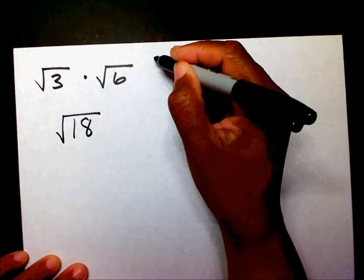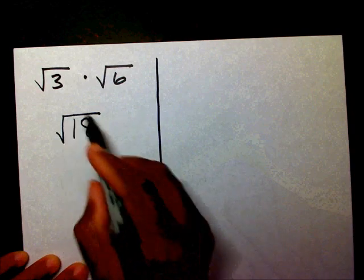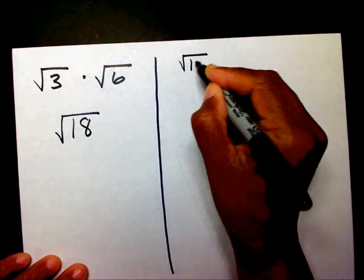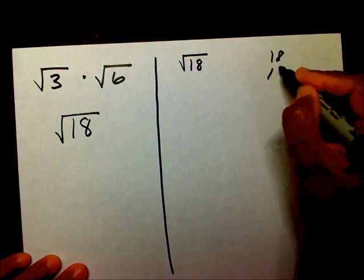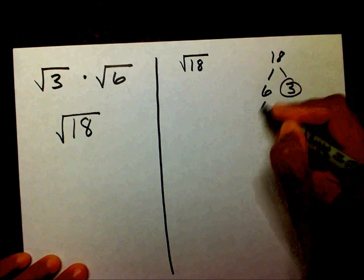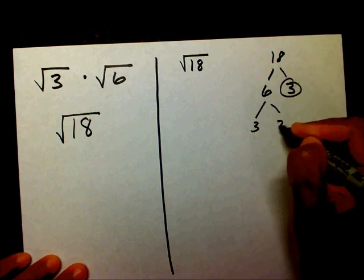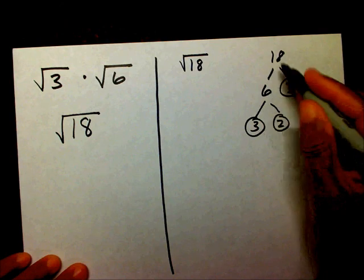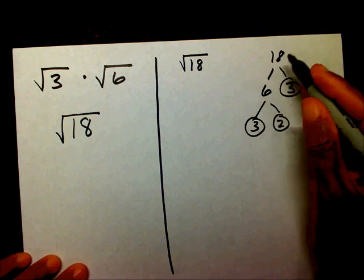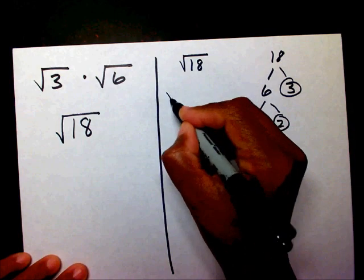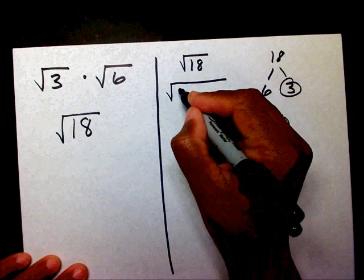Now, we need to make sure this is in simplest form and we're going to simplify that radical 18 by making a factor tree and finding the prime factorization. If you don't know how to find the prime factorization of a number, please watch my video on prime factorization.